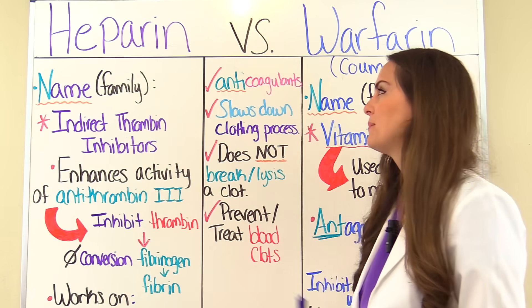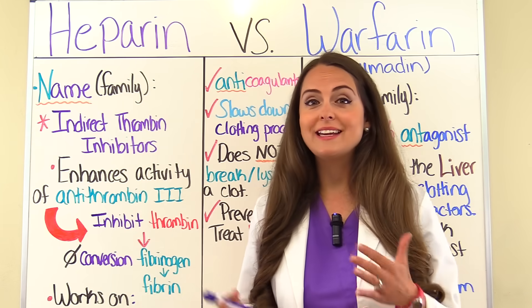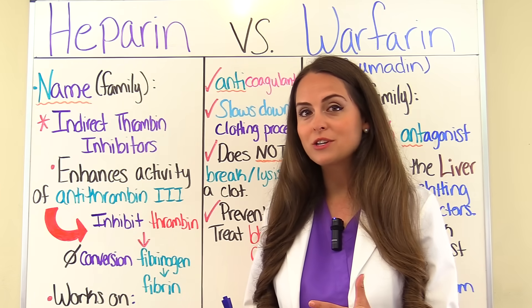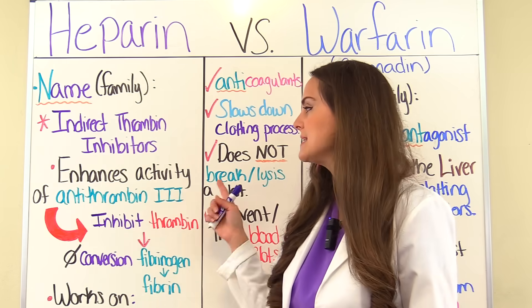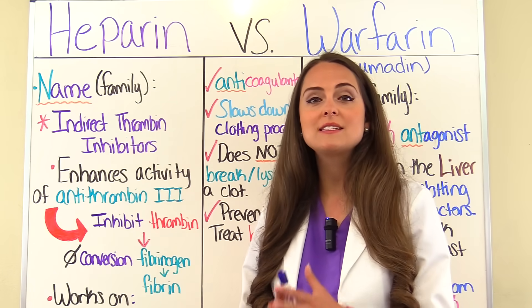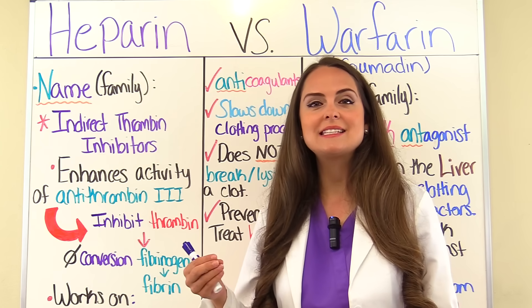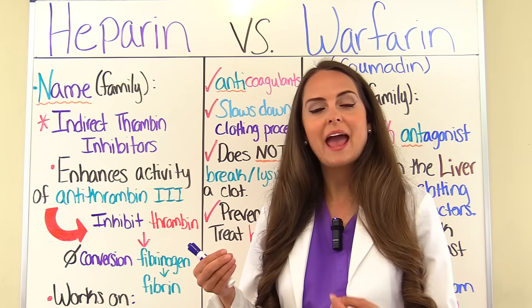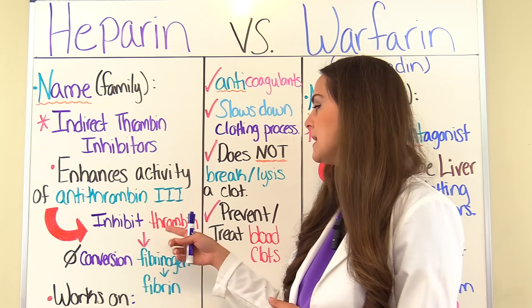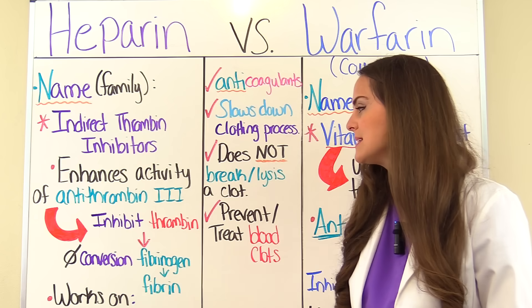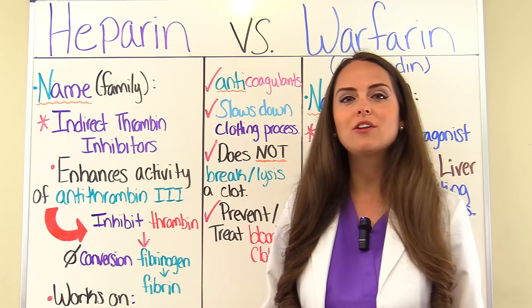Let's talk about heparin. This drug is part of the family of the indirect thrombin inhibitors — it indirectly inhibits thrombin, which is going to alter our clotting process. It enhances the activity of a naturally occurring substance in our body called antithrombin 3. Once heparin hits the system, it causes antithrombin 3 to inhibit thrombin, and whenever this happens it stops the conversion of fibrinogen to fibrin, so we've altered our clotting process.